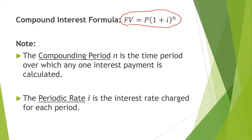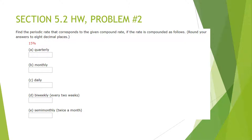To find the compounding period N, you take the number of years of the loan or investment and multiply that by however often it's compounded. For example, if it's a two-year loan compounded monthly, that would be 2 times 12. The periodic rate I is the interest rate charged for each period. You always take the interest rate — for example, if it's 6% — and divide by how often the interest is compounded. If it's monthly and 6%, you would take 6% divided by 12.